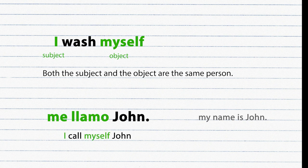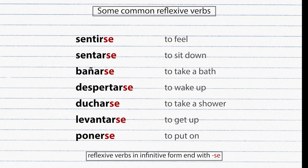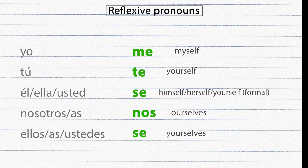Some reflexive verbs cannot be directly translated into English, so it's better to memorize the most common ones. Reflexive verbs in infinitive form end with SE. They are conjugated like any other verb, but you must use a reflexive pronoun before the verb. The reflexive pronouns in Spanish are: Me, Te, Se, Nos, Se.